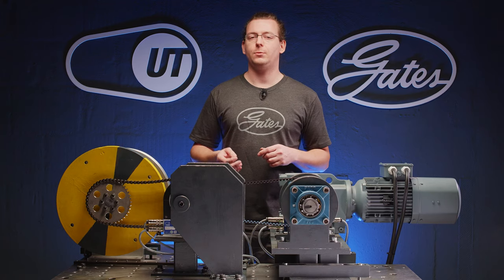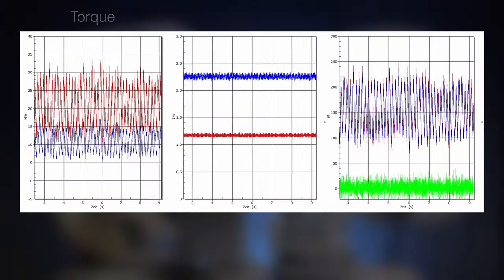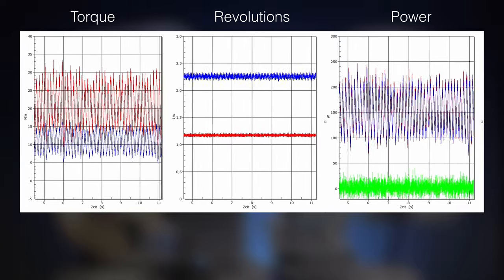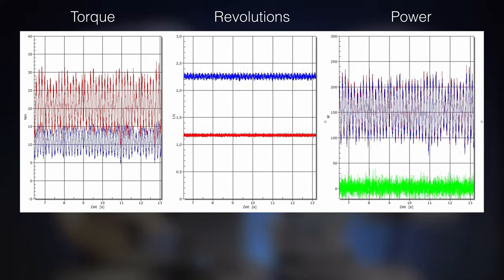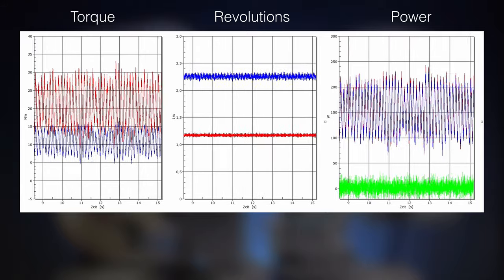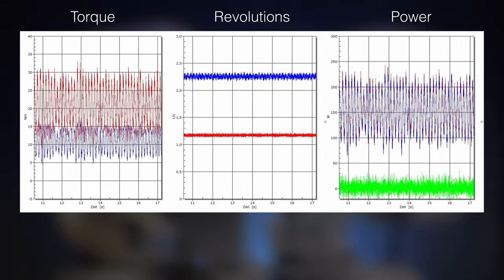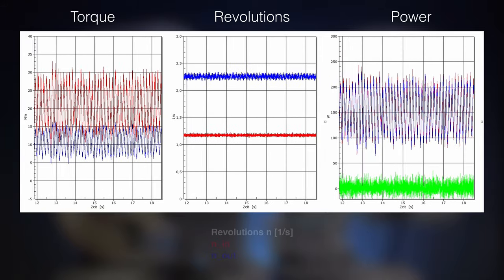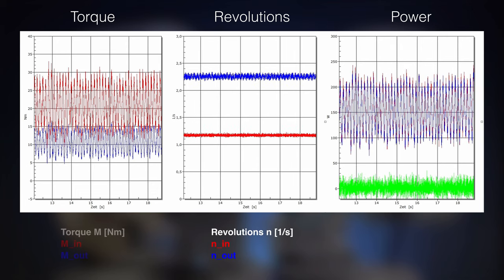So let's have a look at one of those measurement points as an example. What we see here is the live sensor readout of our continuous measurement at a stationary power rate of 150 watts in this case. Let's pause it for a second. We can see the values of the revolutions and the torque on the input sensor displayed in red as well as on the output sensor displayed in blue.